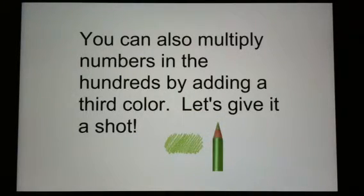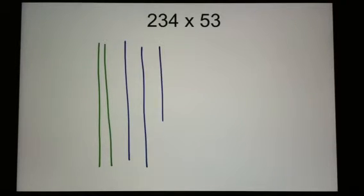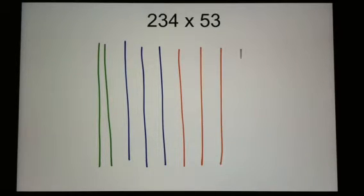You can also multiply numbers in the hundreds by adding a third color. Let's give it a shot. I'm going to add green to represent my hundreds. So with 234, I have two hundreds, I have three tens, and I have four ones.